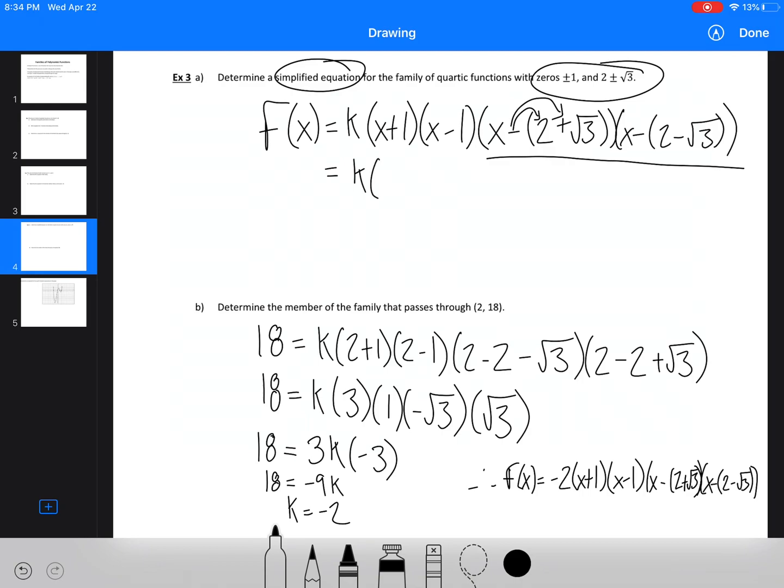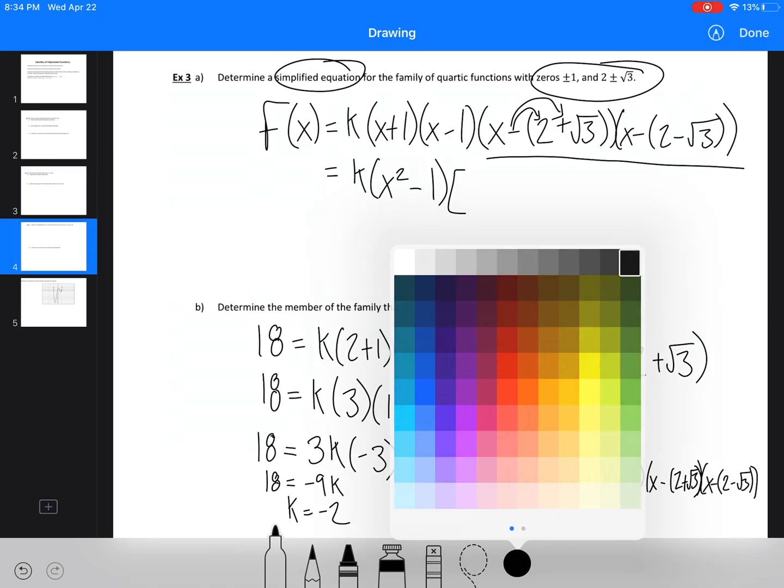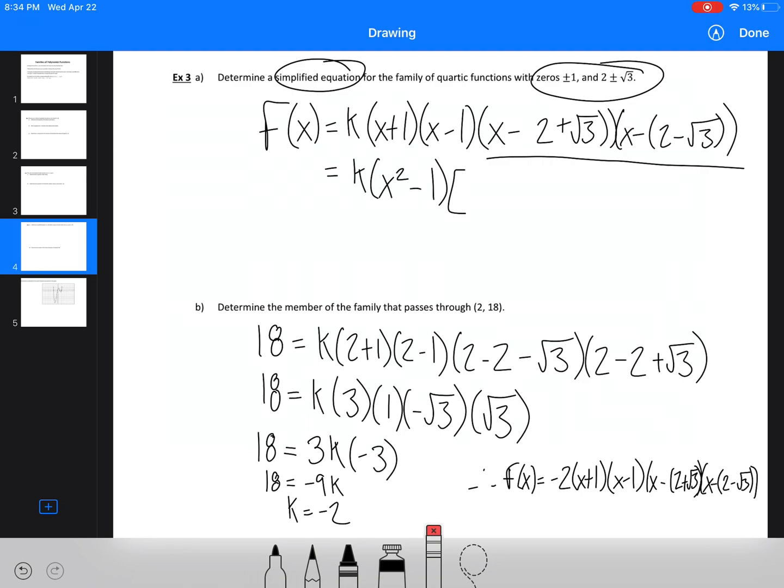So why don't we do that really quick? The last question, or the last example is actually quite simple. This is x squared minus 1, that's a difference of squares. Now up at the top, what I'm going to do is I'm going to make this a difference of squares as well. Now what I'm going to do is I'm going to take these first two terms and write them in a bracket, just so that you can see it.